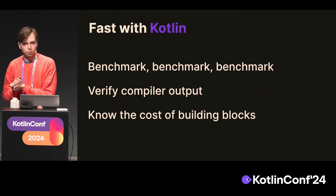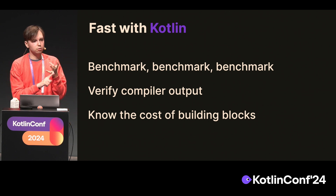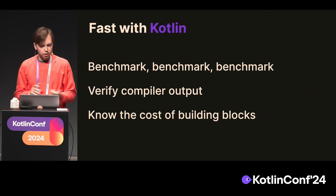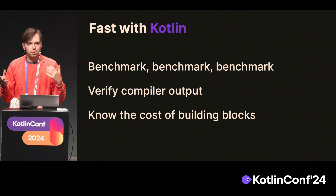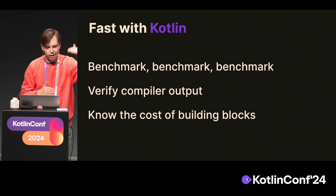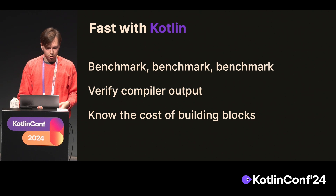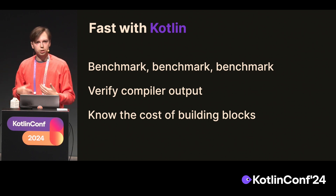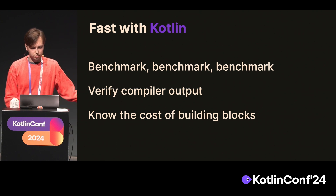So, how to go fast with Kotlin in Compose? The first rule is to benchmark. The second rule is to benchmark again. The third rule is to benchmark on CI so you don't accidentally regress performance after you just fixed it. It's also really useful to verify the compiler output sometimes — either with static analysis tools or by looking for yourself, because in Kotlin code it's not always obvious what's happening. It does a lot of cool things and a lot of interesting, weird things. And finally, know the cost of your building blocks: how much coroutines cost, what is slow in collections, what is faster, and which is the more frequent use case in your situation.